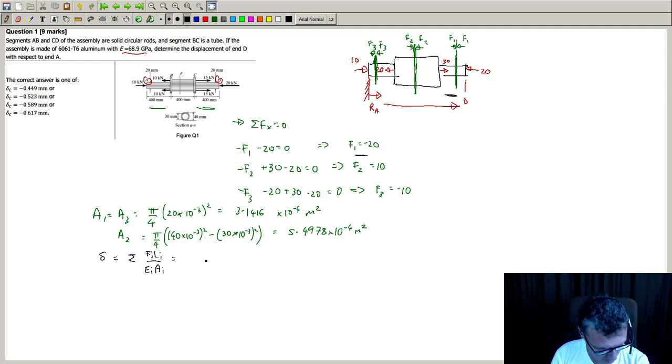And that works out to be, well, the first section will be this one here. So we want to be using F1, and that will be minus 20 times 10 to the power 3, and it's got a length of 400 millimeters. And it has Young's modulus of 68 - they all have Young's modulus of 68 gigapascals - and the area for the first section is 3.1416 times 10 to the minus 4.